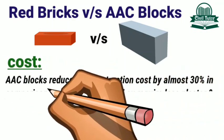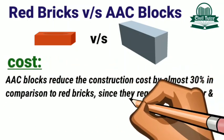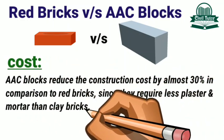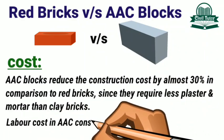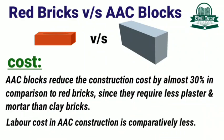AAC blocks reduce the construction cost by almost 30% in comparison to red bricks, since they require less plaster and mortar than clay bricks. Plus the labour cost in AAC construction is comparatively less.